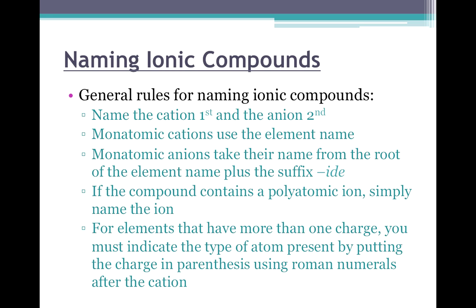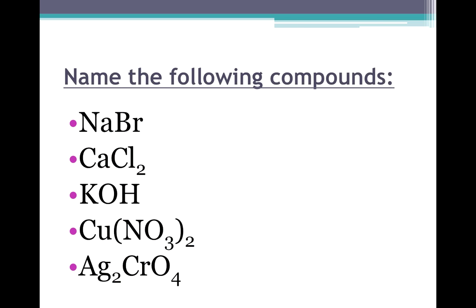Remember, if an element falls in the dungeon it can sometimes have more than one charge, so you'll need to look at your chart. If there are two different charges listed — for example, copper can have two different charges — you have to let the reader know which copper you have. The way you do that is you put the charge of copper in parentheses as Roman numerals.